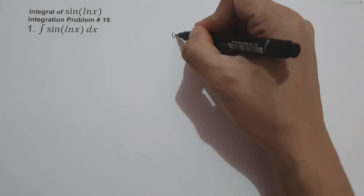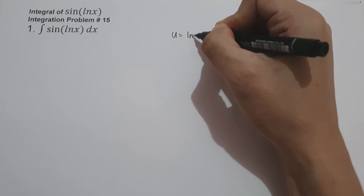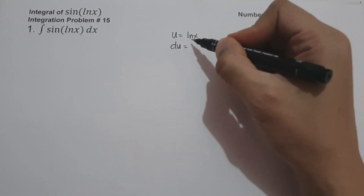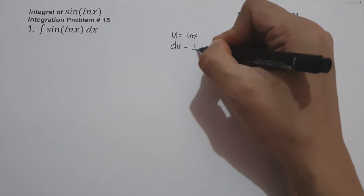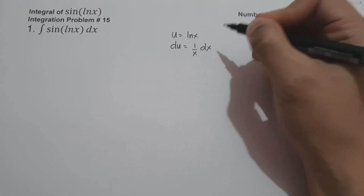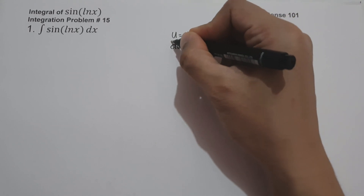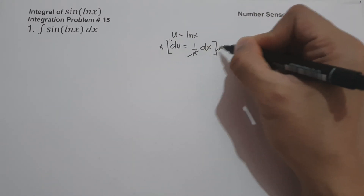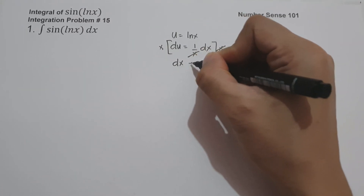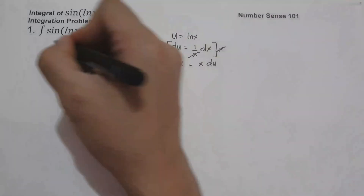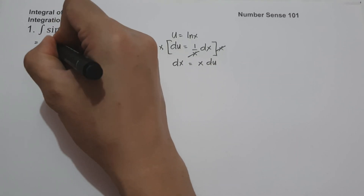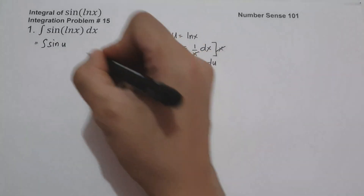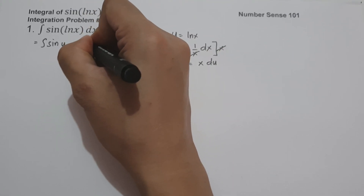Let us set u as ln x, and du is the derivative of ln x, which is 1 over x dx. To isolate dx, let us multiply both sides by x, so the value of dx is x du. So we have the anti-derivative of sin(u) times x du.